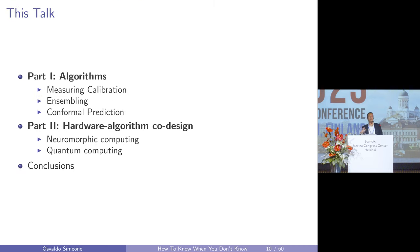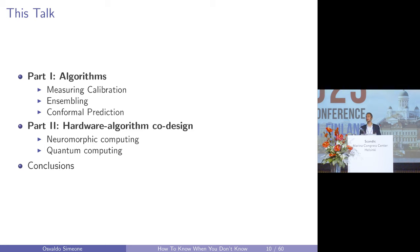Second, hardware-algorithm co-design: if we wish to implement reliable AI efficiently, we shouldn't just implement deterministic processes as accurately as possible, but also implement stochastic processes that can represent and reason about uncertainty. This creates challenges at the intersection of hardware and algorithm design. The talk will be divided into two parts — the first on algorithms and the second on hardware, with the first part being longer.